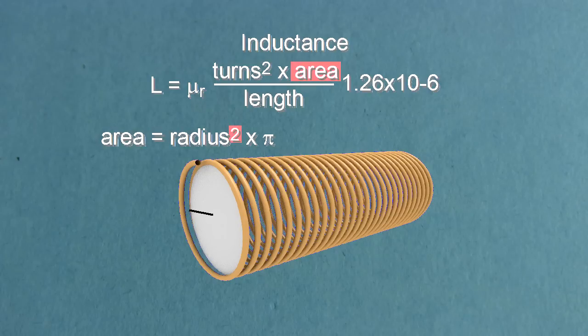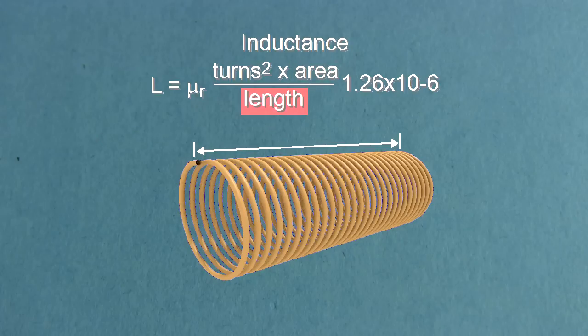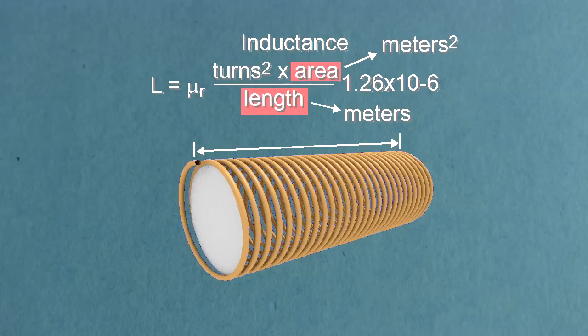It's the radius squared, i.e. the radius multiplied by itself, and then multiplied by pi, which is 3.14. And this is the length. Both the area and length are in meters, not inches.